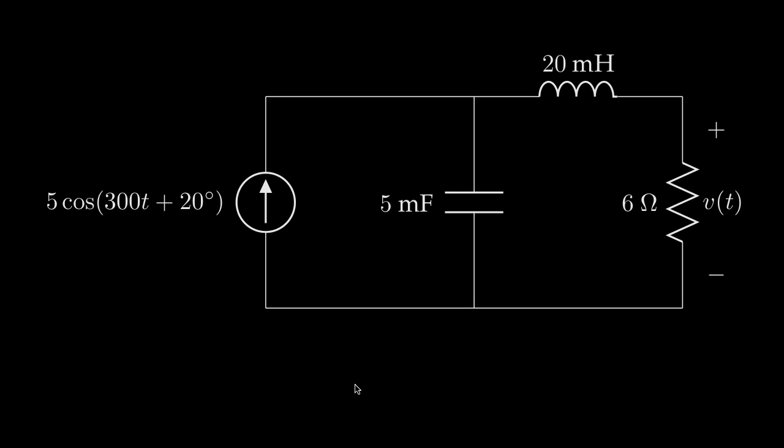For this circuit, current is provided by a sinusoidal steady state current source that operates at a frequency of 300 radians per second with an amplitude of 5 amps and a phase of 20 degrees.